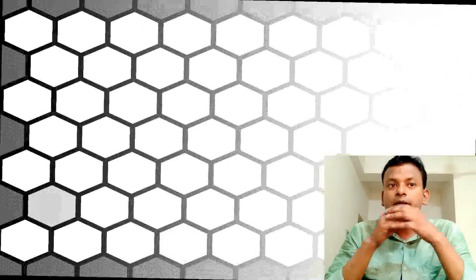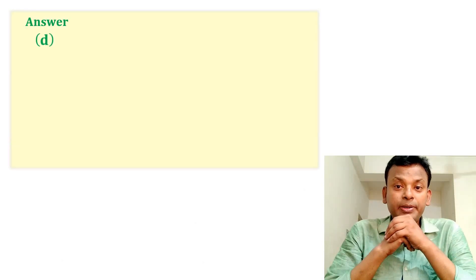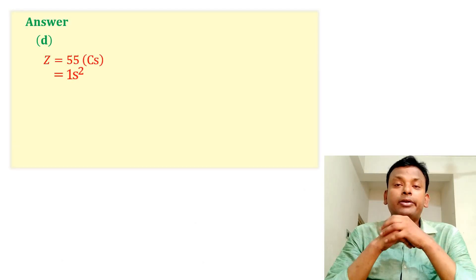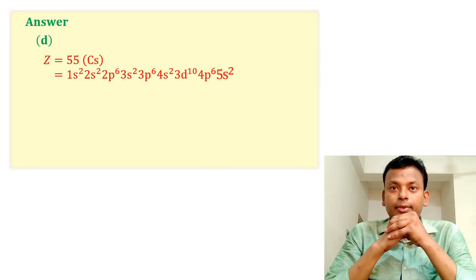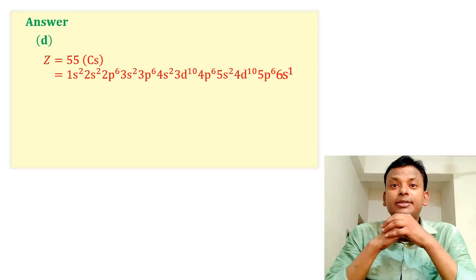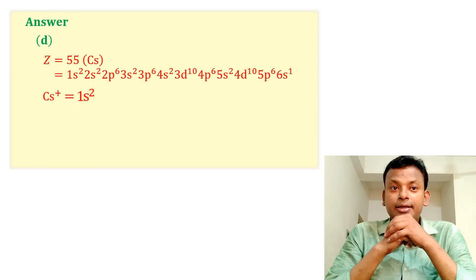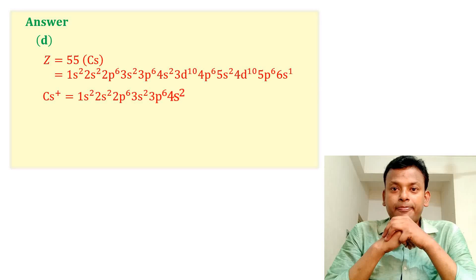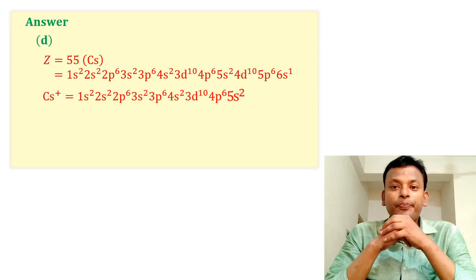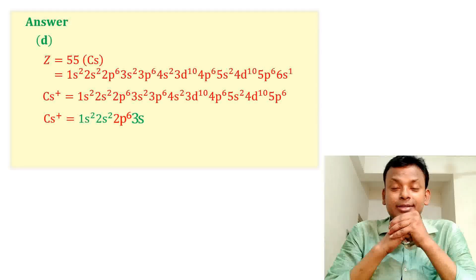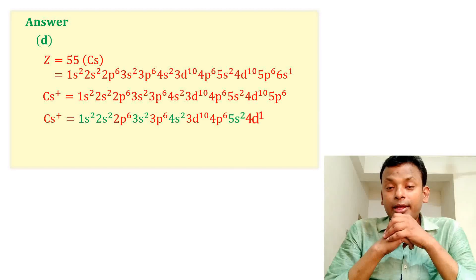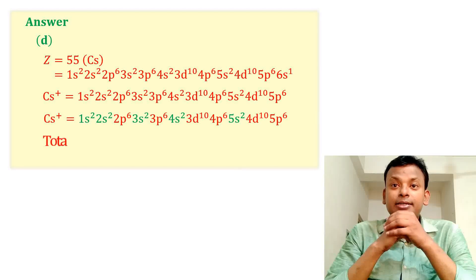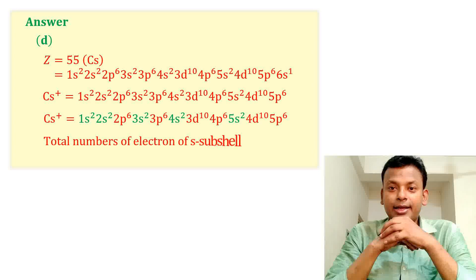Option D is correct answer. We know that 55 is cesium and electronic configuration is this, and Cs positive is this. Number of s electrons is 10. Green color is s orbital, so total number of electrons in s sub-shell is 10.